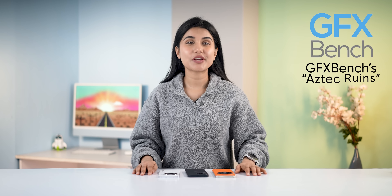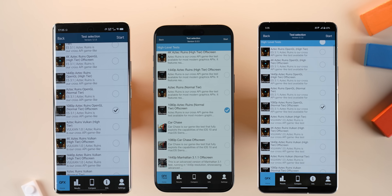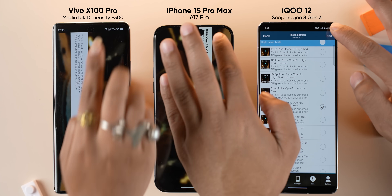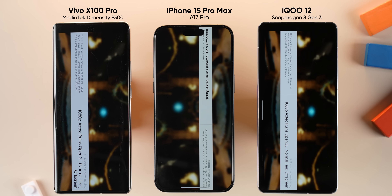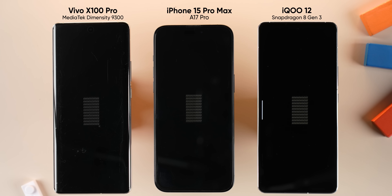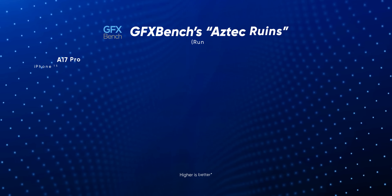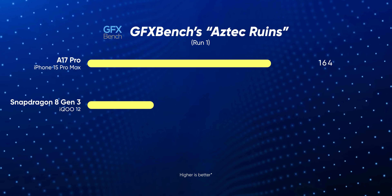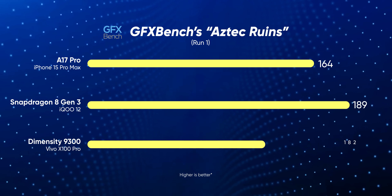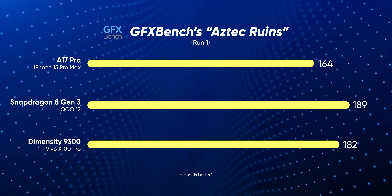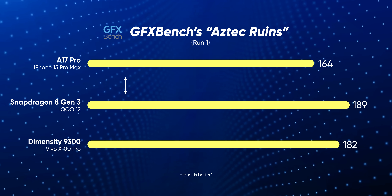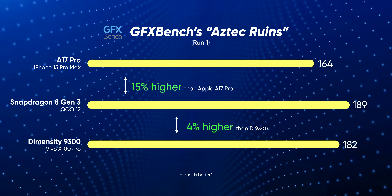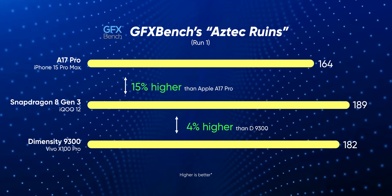I also ran GFXBench's Aztec Ruins scene at 1080p resolution, which simulates all kinds of in-game scenarios like global illumination, motion blur, and ambient occlusion. Here too, the Snapdragon 8 Gen 3 proved to be too much for the A17 Pro and the Dimensity 9300, with 15% and about 4% higher FPS respectively.